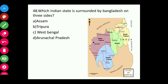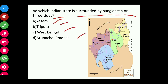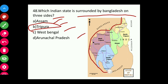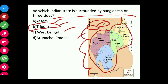Question forty-eight: Which Indian state is surrounded by Bangladesh on three sides — Assam, Tripura, West Bengal, or Arunachal Pradesh? The answer is Tripura. You can see from the map that Tripura is almost entirely covered by Bangladesh on three sides.